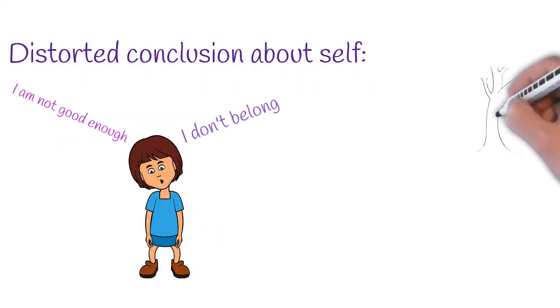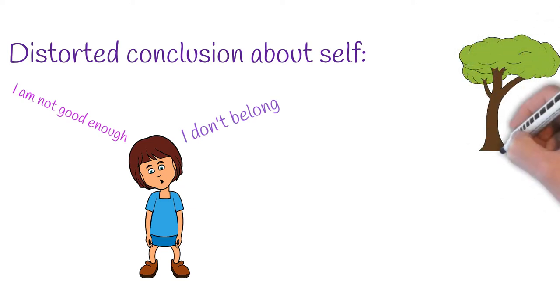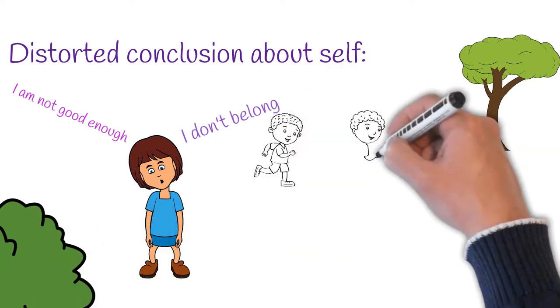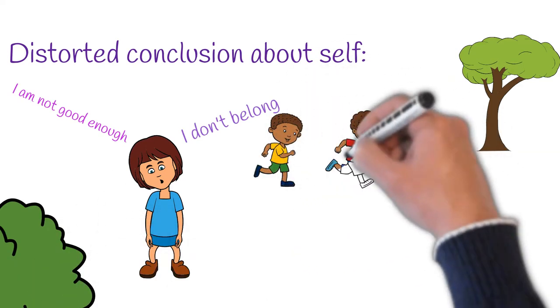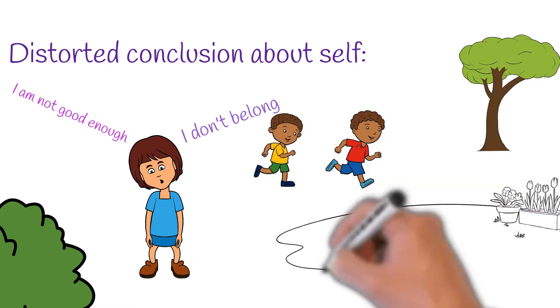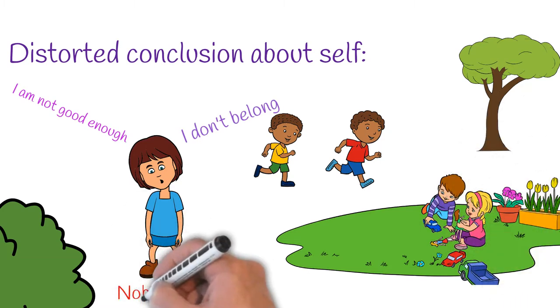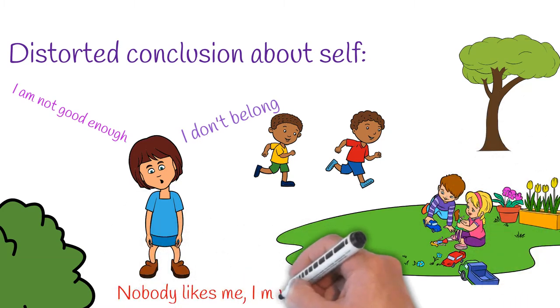For example, take this little girl. She had some stuff happen to her, and that stuff led her to the conclusion of, I'm not good enough and I don't belong. When she sees other children playing, this is a trigger for her and her negative thoughts about herself come up and something like nobody likes me, I must be bad happens. Poor little girl.